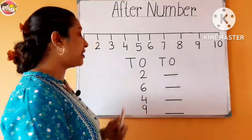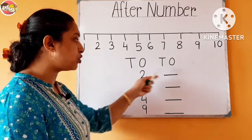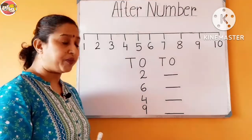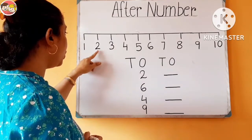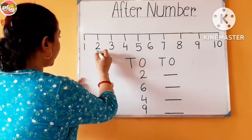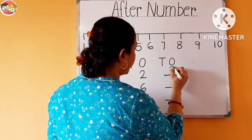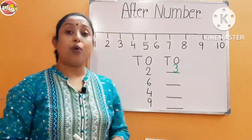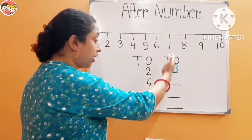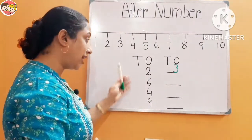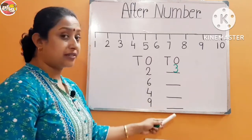For example, this is number 2. What comes after number 2? Number 2 ke baad kya aata hai? Look at the number line — this is number 2. What comes after number 2? 2 ke baad 3. So the answer is 3, and here we have to write number 3. One more thing to keep in mind: for after numbers, the right side place will always be empty.